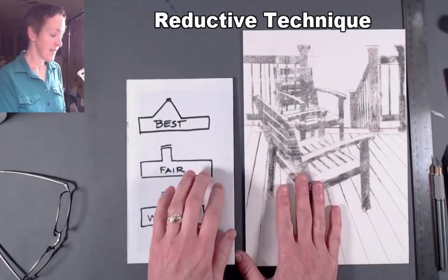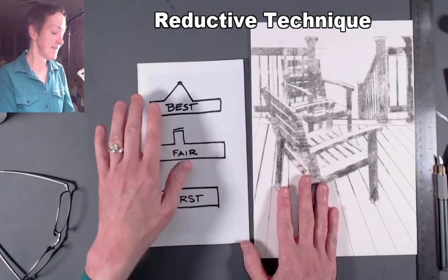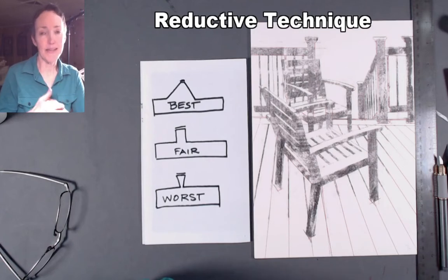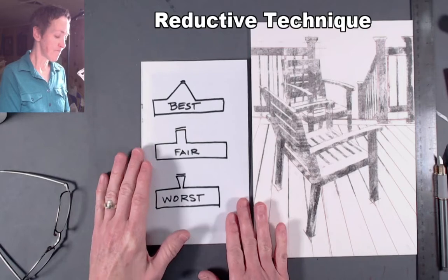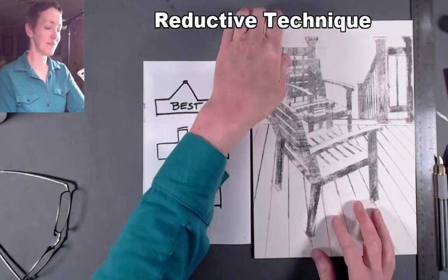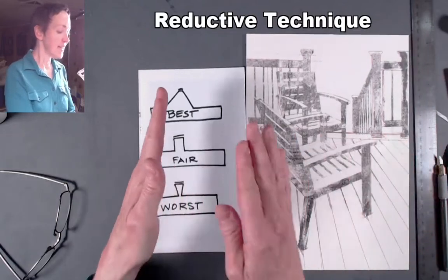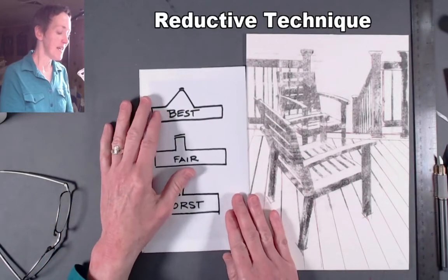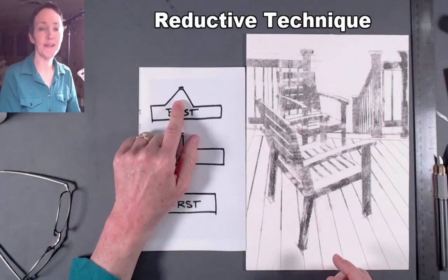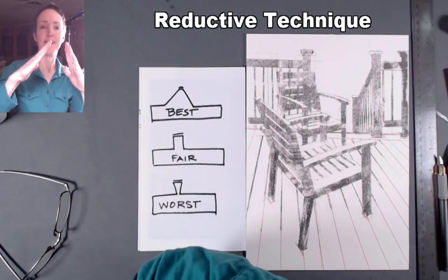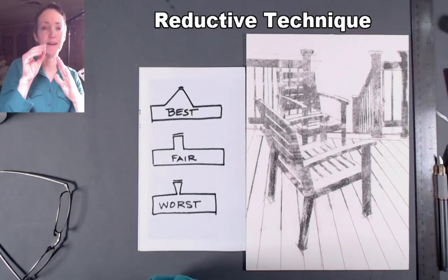So as you're cutting, one thing I really want you to think about is how durable those raised marks are going to be when it comes time to ink them. So if you are thinking about the plate sort of in cross section, so we're looking at it from the side of it, as you're cutting down into the plate, your lines will be most durable if you can create sort of this buttressed ramps that lead to the top of your plate.